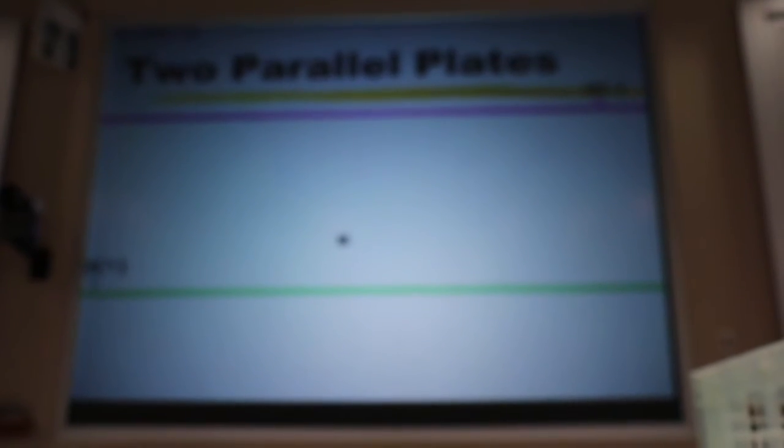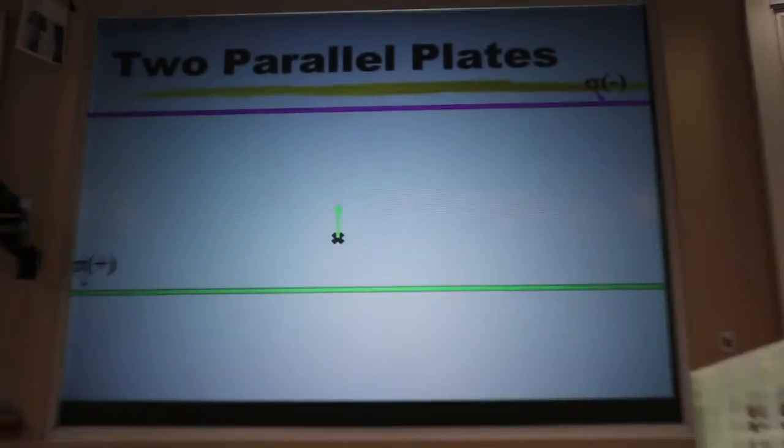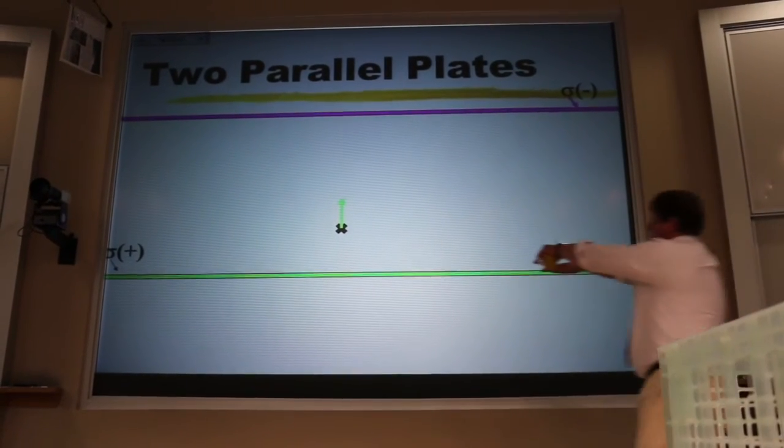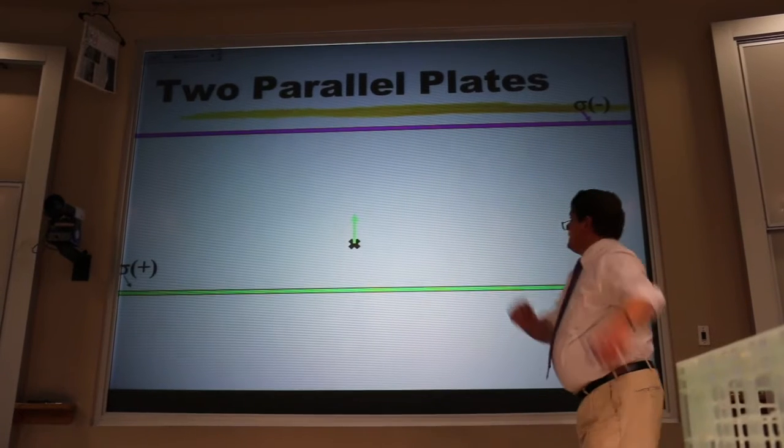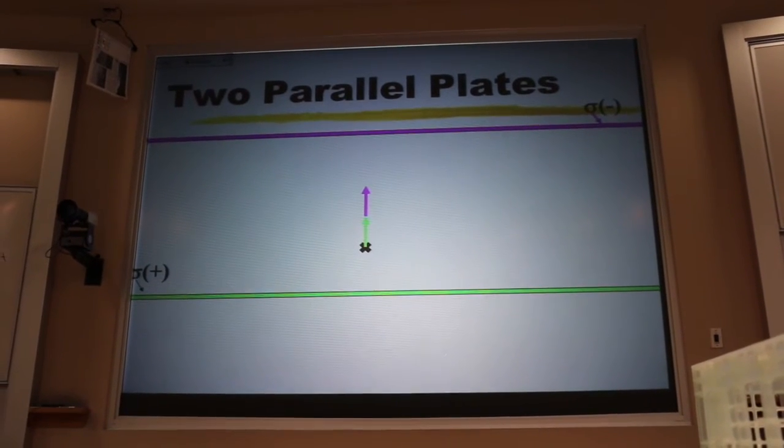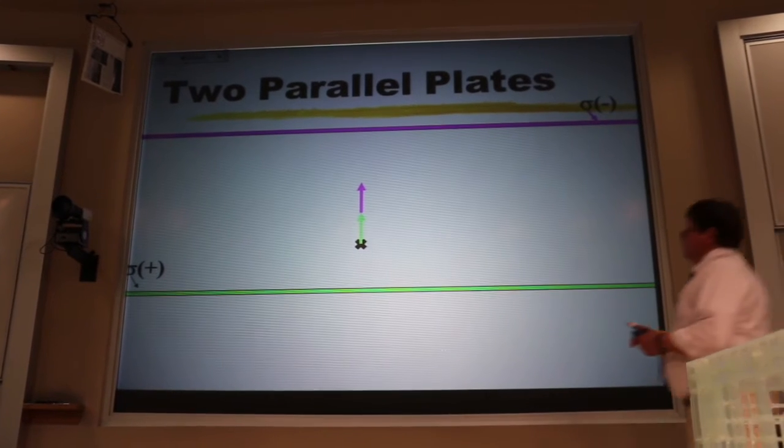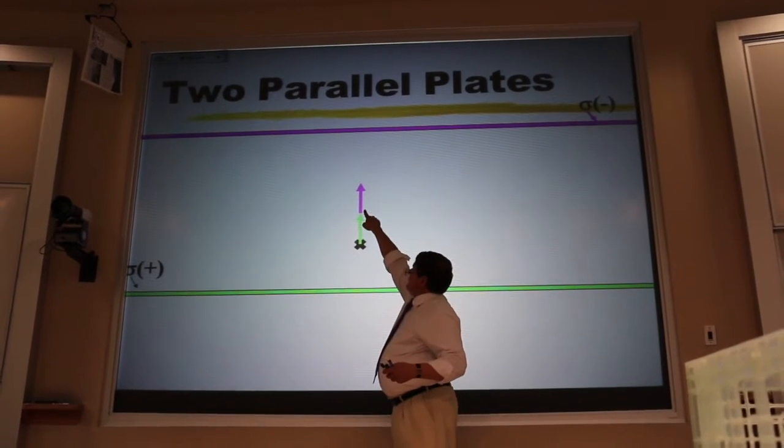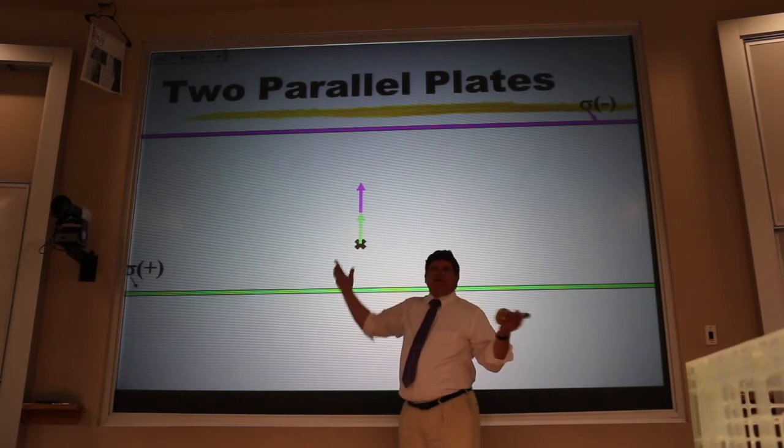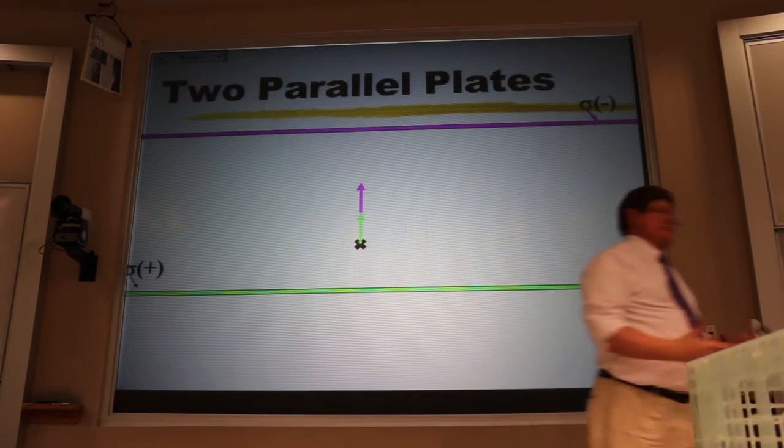If I use superposition, I'm going to have at that x a contribution due to the positive source, the positive plate. Remember this comes out forever. And I'm going to have a contribution due to the negative plate. Now folks, notice that these are the same size, even though the x is closer to the green sheet than the purple sheet, distance doesn't matter.